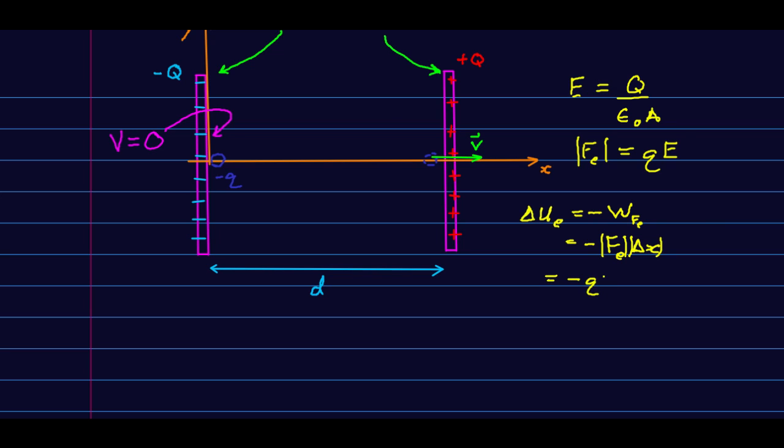but delta x is just d. That's the distance traveled. And so our delta UE is negative q, capital Q over epsilon naught A, d.